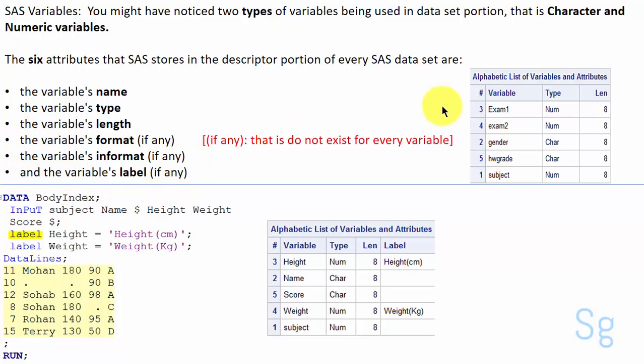For our current program you can see that we have only used the first three, so we have got variable name, its type and length, whereas if I have used this program with label statement then I would have got label attribute as well.